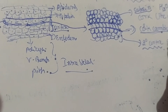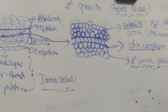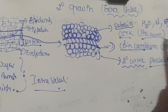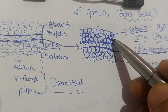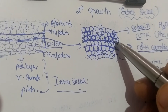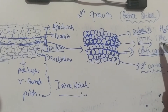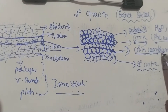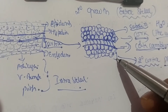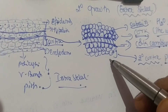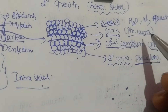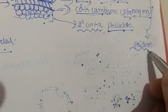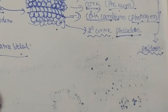This secondary cortex has the name phelloderm, whereas another name for cork cambium is phellogen, and another name for cork is phellem. What is cork? The outermost layer where there is a deposition of suberin in some cells is called cork — another name for cork is phellem, another name for cork cambium is phellogen, and inward of the cork cambium is secondary cortex, also called phelloderm. The phelloderm, phellogen, and phellem together are called periderm.